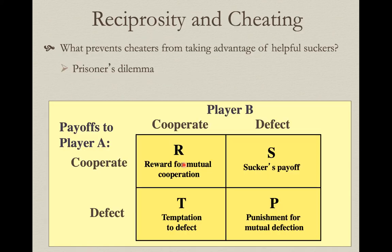The key issue is what prevents cheaters from taking advantage of altruists. If some individuals constantly give altruistic benefits but never get a return, they're just suckers being taken advantage of. This leads to a situation called the prisoner's dilemma in game theory. The prisoner's dilemma is the reason why reciprocity might be difficult to evolve; tit for tat is a potential solution to that.